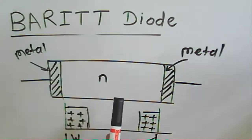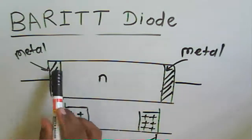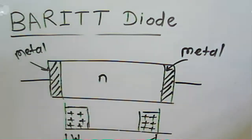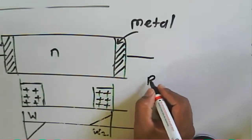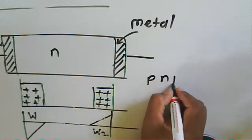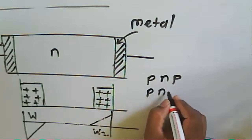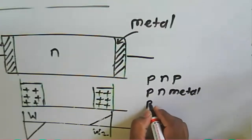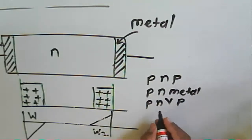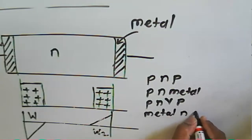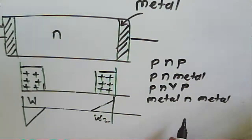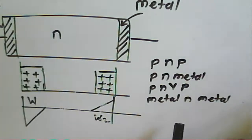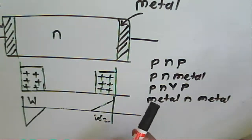The BARITT diode generally consists of an N layer between two metals. It can have various structures: P-N-P, P-N-metal, P-N-V-P, or metal-N-metal. These represent the different structural configurations of the BARITT diode.